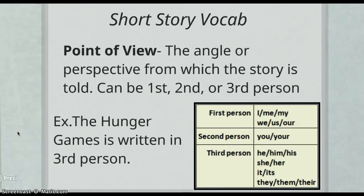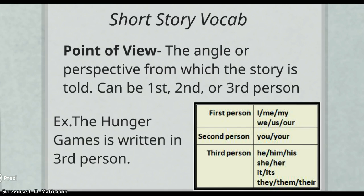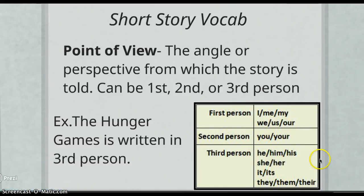Next we have point of view, which is the angle or perspective from which the story is told. It can be first, second, or third person. First person uses I, me, and my. Second person uses you and your. Third person uses he, him, his, she, and her. The Hunger Games is written in third person, so you can look through the text and see those pronouns used throughout.